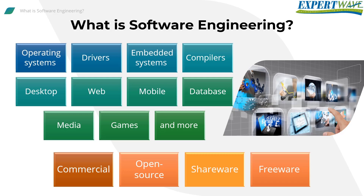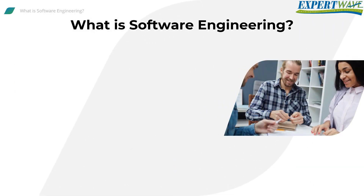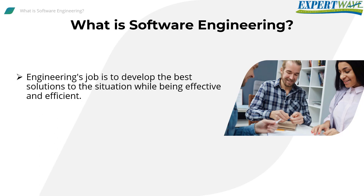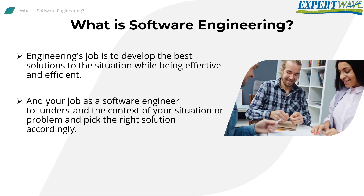That's why each type needs a particular way of development. Knowledge brings theories and solutions to the table; however, in engineering, not all solutions are necessarily available or applicable to your project's context. This is why engineering's job is to develop the best solutions to the situation while being effective and efficient. Your job as a software engineer is to understand the context of your situation or problem and pick the right solution accordingly.